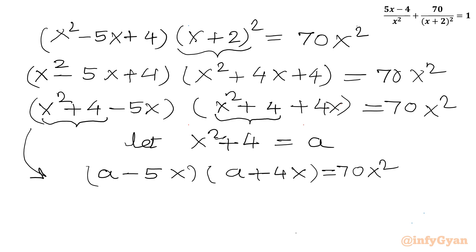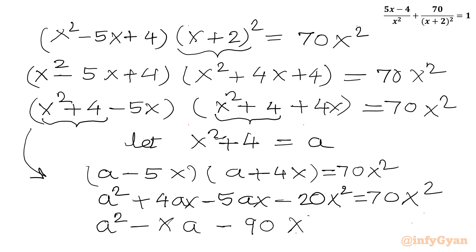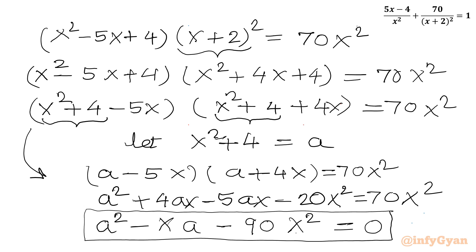The equation becomes (a - 5x)(a + 4x) = 70x². Expanding: a² + 4ax - 5ax - 20x² = 70x², which simplifies to a² - ax - 20x² = 70x². Moving 70x² to the LHS gives a² - ax - 90x² = 0. This is one quadratic equation in a.